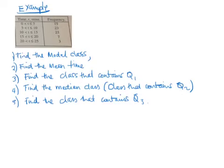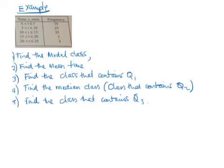Here's another example. We have a grouped frequency table with times: 0 to 5, 5 to 10, 10 to 15, 15 to 20, 20 to 25, and we're given the frequencies. Each one of these is called a class. We're asked to find the modal class, the mean time, the class that contains Q1, the median class (the class that contains Q2), and the class that contains Q3.